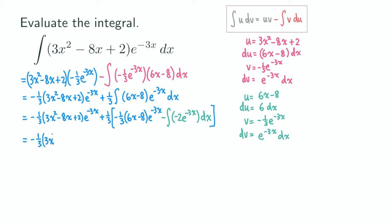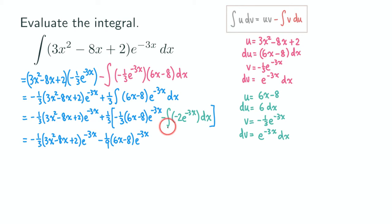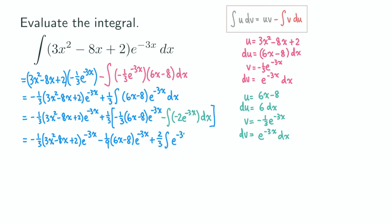Cleaning up: we have negative 1 third times (3x squared minus 8x plus 2) e to the negative 3x. Distributing the 1 third, we get 1 third times negative 1 third equals negative 1 over 9, times (6x minus 8) e to the negative 3x. For the integral term, there's a minus sign and another minus sign in front of the 2, so they cancel to give positive 2, and 1 third times 2 gives positive 2 over 3. So we have plus 2 thirds times the integral of e to the negative 3x dx.